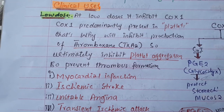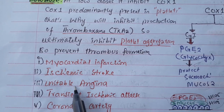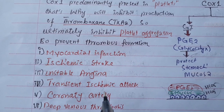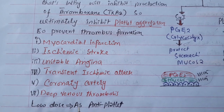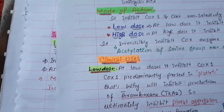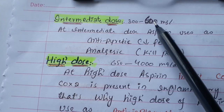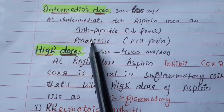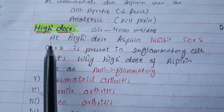By preventing thrombus formation, low-dose aspirin is used in myocardial infarction, ischemic stroke, unstable angina, transient ischemic attack, coronary artery disease, and deep venous thrombosis. Intermediate doses of 300 to 650 mg are used as antipyretic and analgesic.